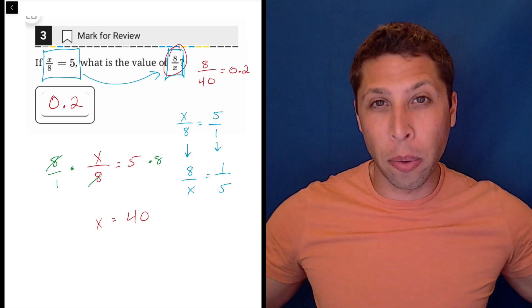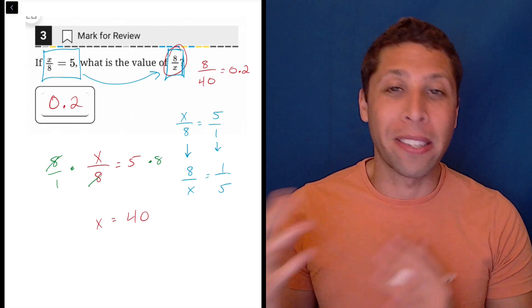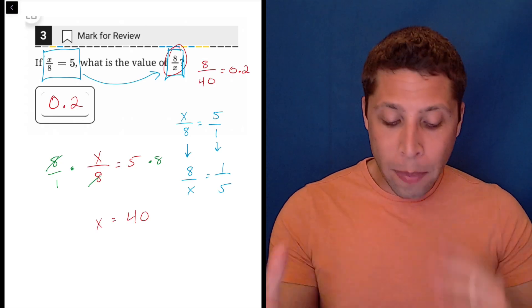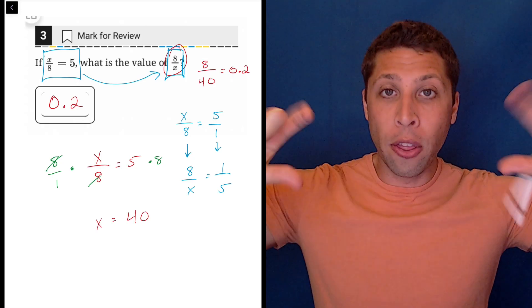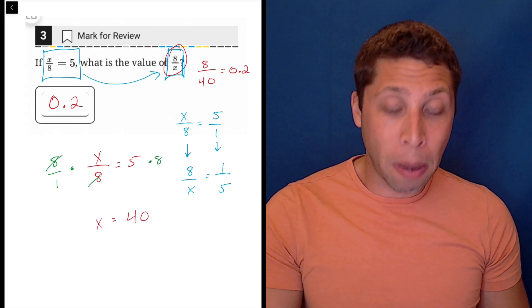There might be cases where there's other things going on in more complicated equations, maybe throw in a plus three or something somewhere. That might make it so that this shortcut doesn't work, but if we basically have two fractions equal to each other, the order top and bottom doesn't really matter. And so if you wanted to bubble this as a fraction, you could.